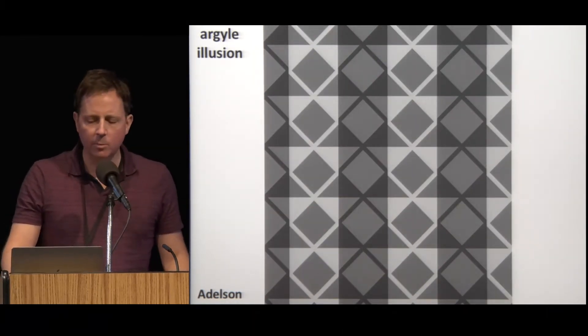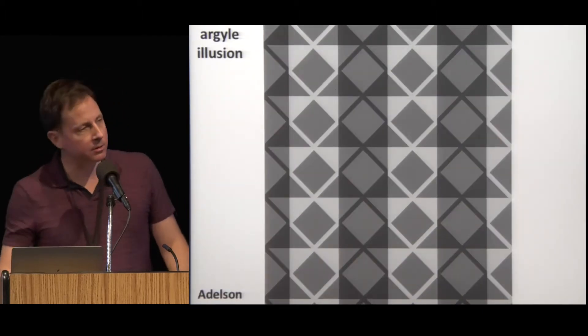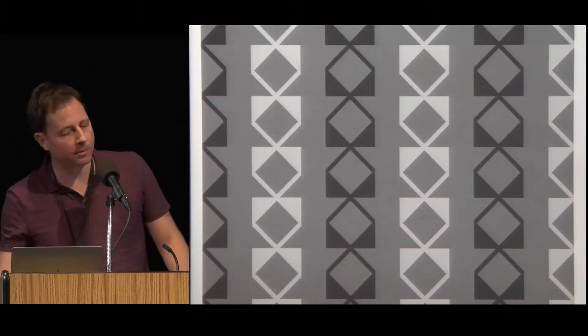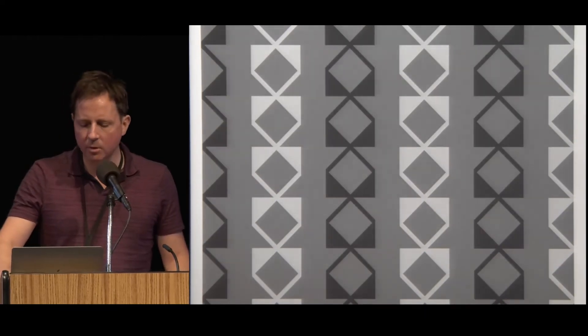Here again we see how weak the relationship between luminance and perceived gray actually is. And interestingly, if we break the surface up like this, then we lose the sense of vertical lighting regions like vertical strips of light and shade, and the illusion becomes much weaker. This suggests that lightness percepts may depend on our visual system estimating the lighting conditions in a scene. I'll have more to say about that later.